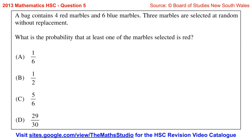Question 5. A bag contains 4 red marbles and 6 blue marbles. 3 marbles are selected at random without replacement. What is the probability that at least one of the marbles selected is red?